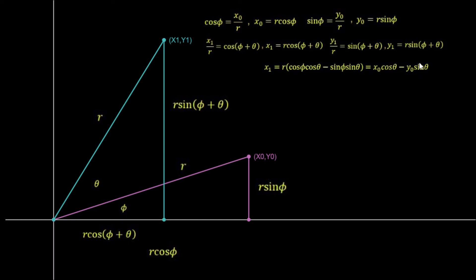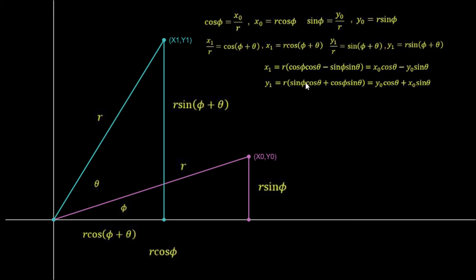We now have the relationship for x₁ in terms of inputs x₀, y₀, and rotation angle θ. We do the same for y₁ = r·sin(φ + θ). The double angle formula gives r·sin φ·cos θ + r·cos φ·sin θ. Since r·sin φ = y₀ and r·cos φ = x₀, we get y₁ = y₀·cos θ + x₀·sin θ.